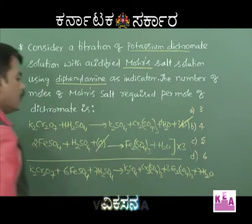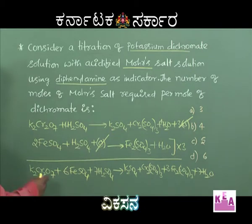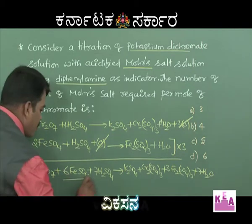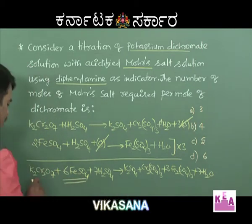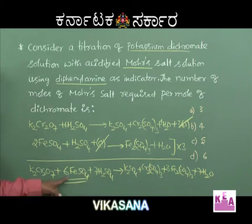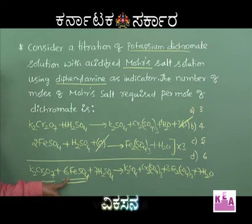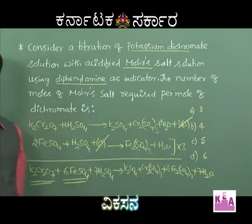Forget about all the byproducts and other reactants. We need to concentrate on the key relationship: every mole of potassium dichromate needs 6 moles of ferrous sulfate for complete reaction. This is one way of determining the answer.